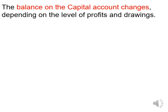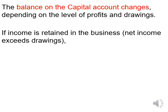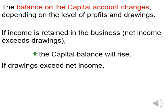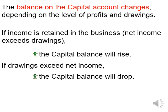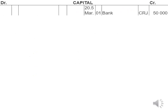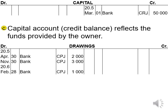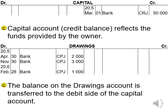The balance on the capital account changes depending on the level of profits and drawings. If income is retained — meaning net profit is more than drawings — the capital balance will increase. If drawings exceed net income, the capital balance will decrease. The capital account has a credit balance reflecting funds provided by the owner. The drawings account represents all money already taken by the owner. Capital belongs to the owner; drawings is what he has already taken.